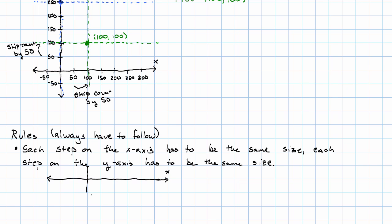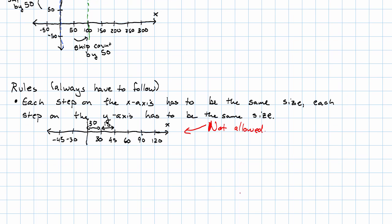Here's my x-axis. Here's a y-axis cutting across it. I could not mark my x-axis this way, where I go from 0 to 30, and then 30 to 45, and then 45 to 60. Why? Because this distance is 30, but this is only 15.